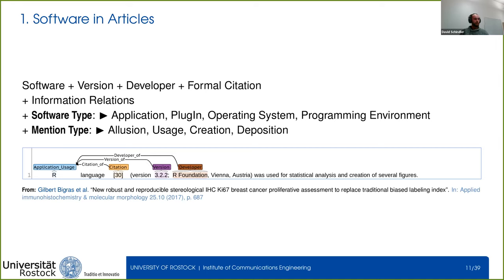This distinction is important because when we perform targeted analysis, we might not be interested in operating systems and may want to exclude them. For the mention type, we distinguish between an allusion — where an article mentions software without adding information on how it relates to the article — and software usage, where an article clearly states that software was applied and is therefore part of the research's provenance.